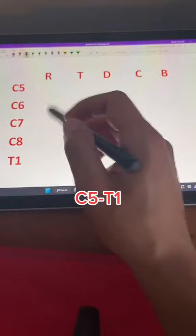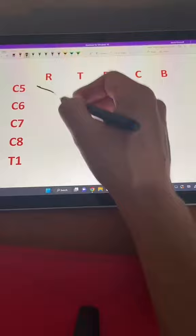Roots, trunks, divisions, cords, branches. Now let's get into it. First, we're going to draw two peaks, followed by three horizontal lines.